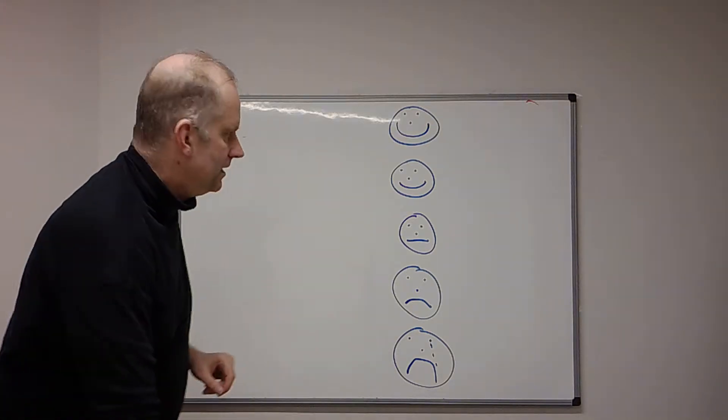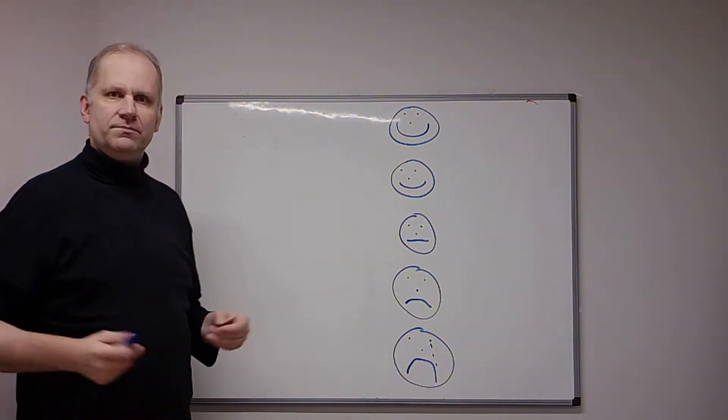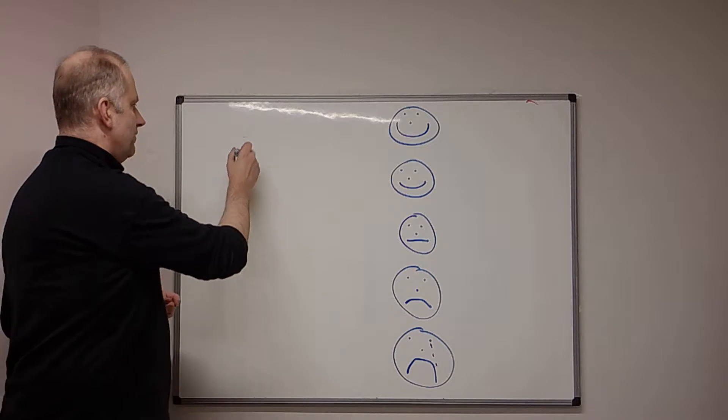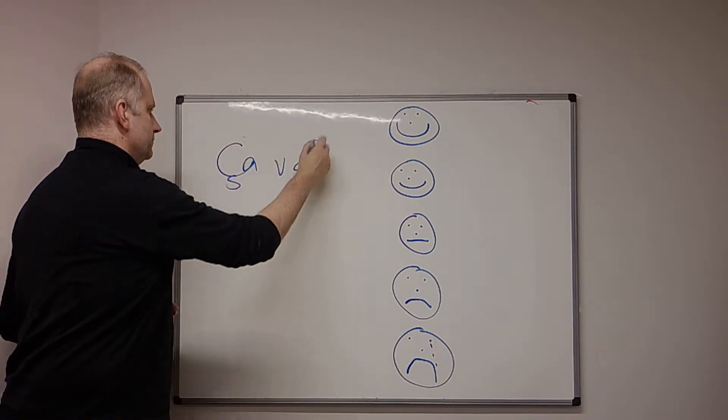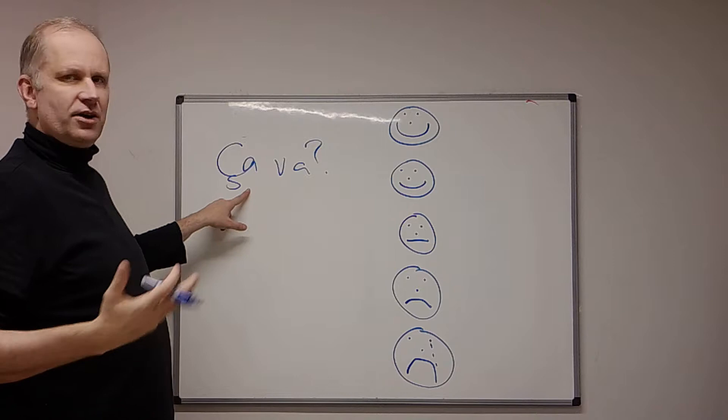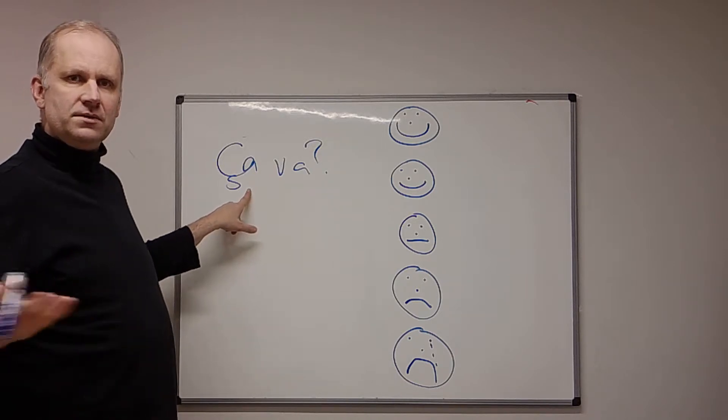So, when somebody, when you see somebody, you can say, Ça va? How's it going? Ça va? So basically means that goes, that goes, life goes, it's going well.